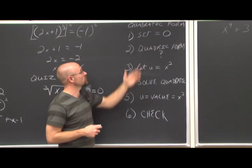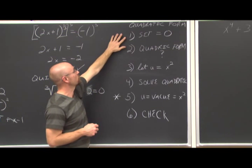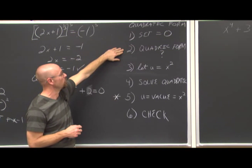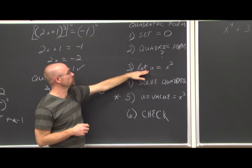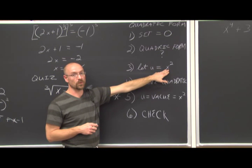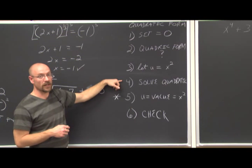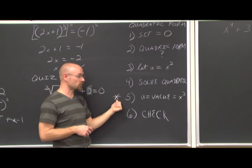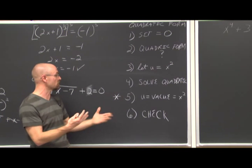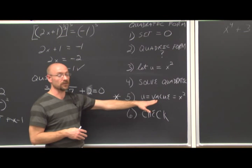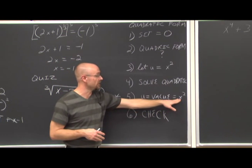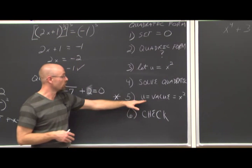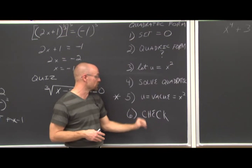Now we're going to look at solving equations that are quadratic in form. First, set them equal to 0, then identify whether they're quadratic in form. We do a substitution: let u equal the squared term, then solve it as a quadratic. An important step students often forget — once you find u, take that value and set it equal to the term you substituted to find the actual x values. Then check your solutions.